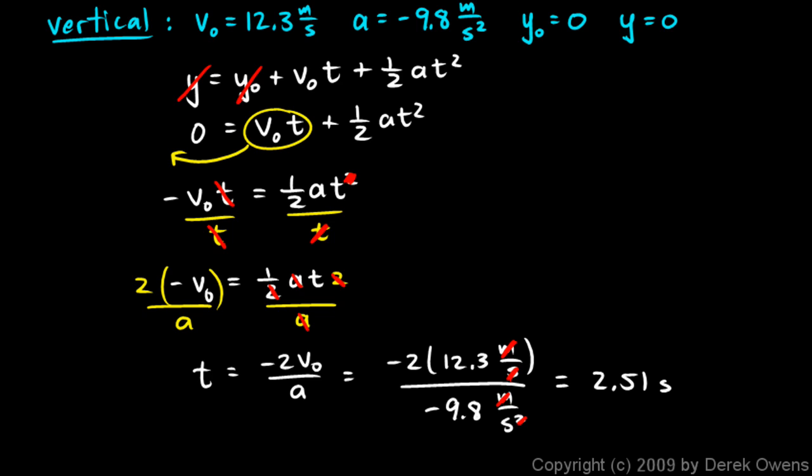And notice we put in the initial height of zero and the final height of zero. This was the height at the beginning, and this was the height at the end, and when we do all this math here and solve for t, we get the time from the beginning to the end. So that's the total time of the flight.